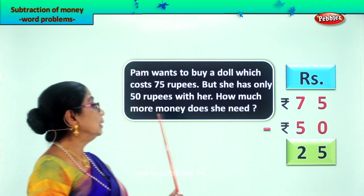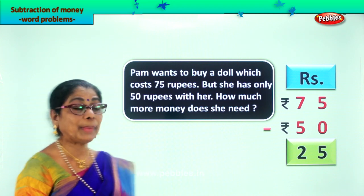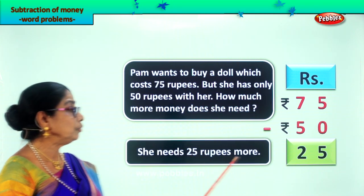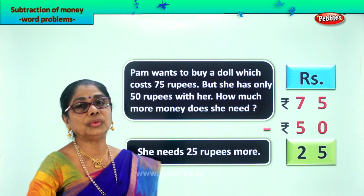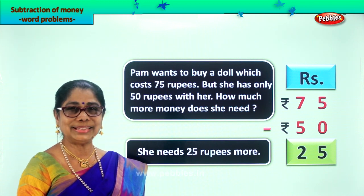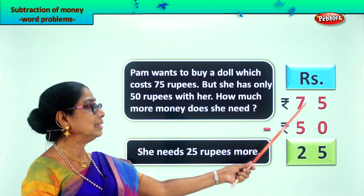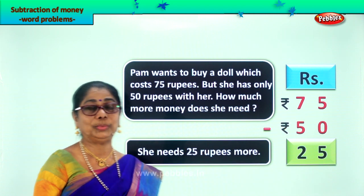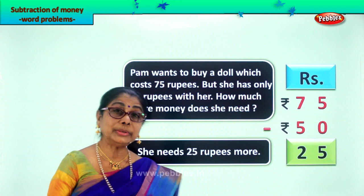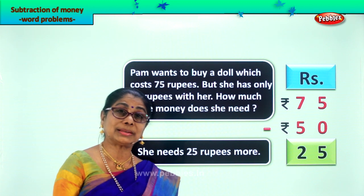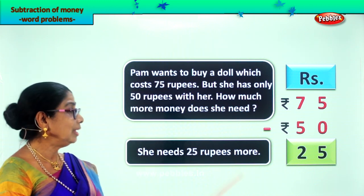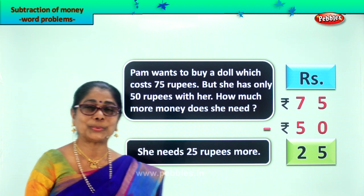Pam needs 25 rupees more to get that lovely doll. What is the cost of the doll? 75 rupees. How much money does Pam have now? 50 rupees. How much more must she collect to get the doll? 25 rupees more. Did you enjoy the word problem in subtraction?